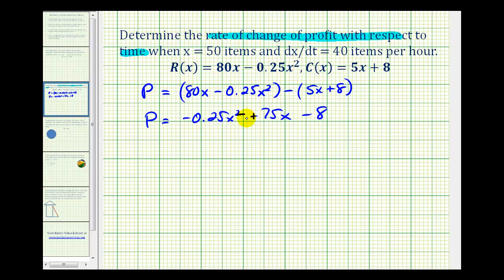But to get a better idea of what's happening here, usually in the profit function, x is the number of items that have been produced and sold. So dx/dt tells us the change in the items produced and sold with respect to time. So in this situation, they're producing and selling items at a rate of 40 items per hour.